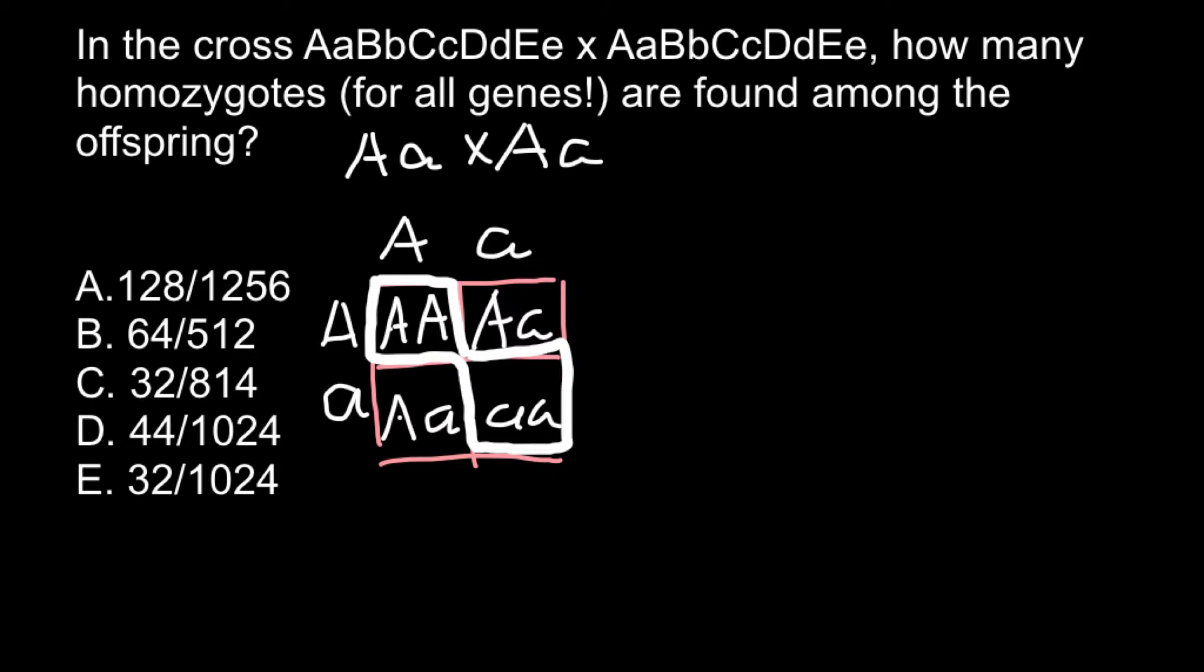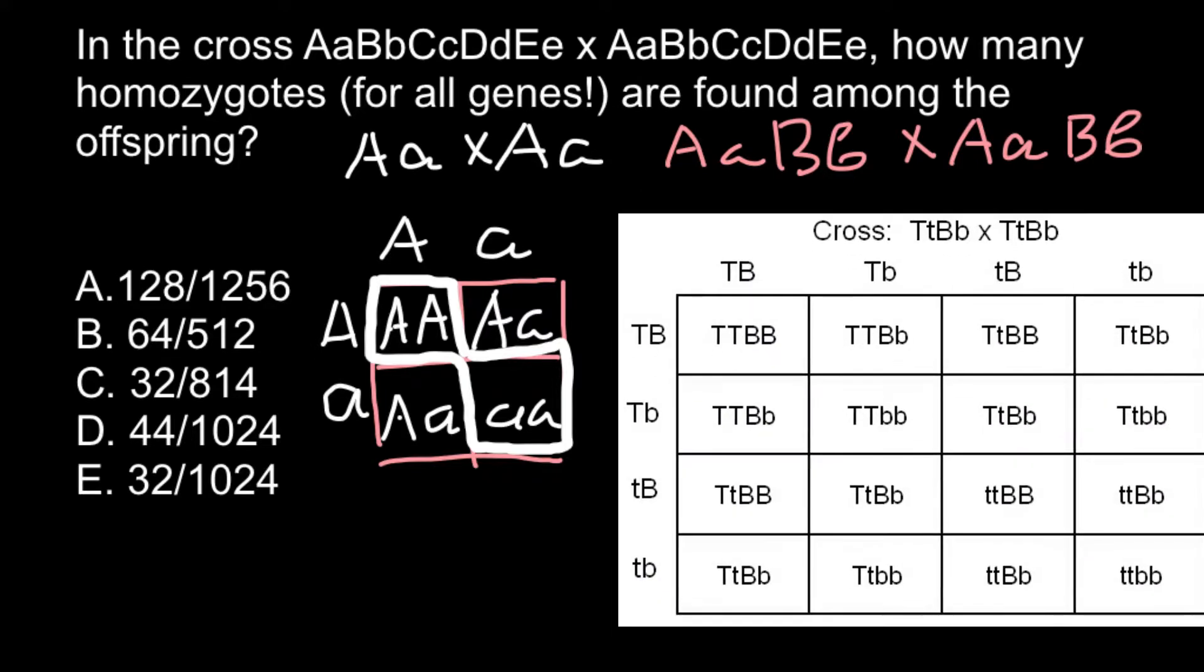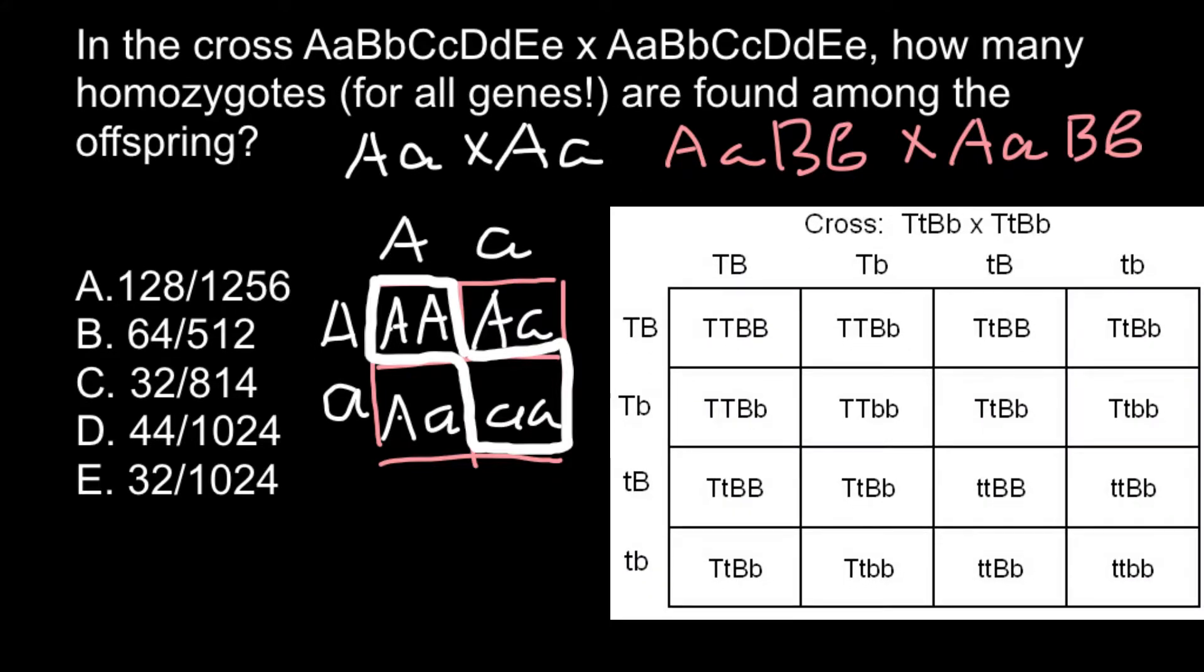Let's take a look at the dihybrid cross. Dihybrid cross means that we have two genes, gene A and gene B, and both these genes in a diploid organism would be represented by two alleles. We have to cross with another dihybrid organism. As you already know from your textbooks, in this case we are going to get a square which is going to be four by four.